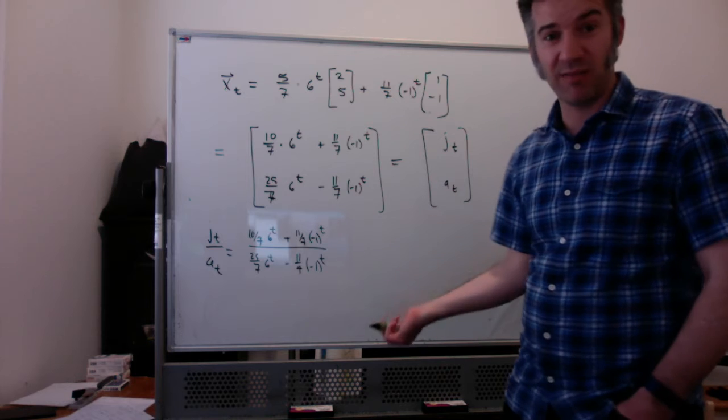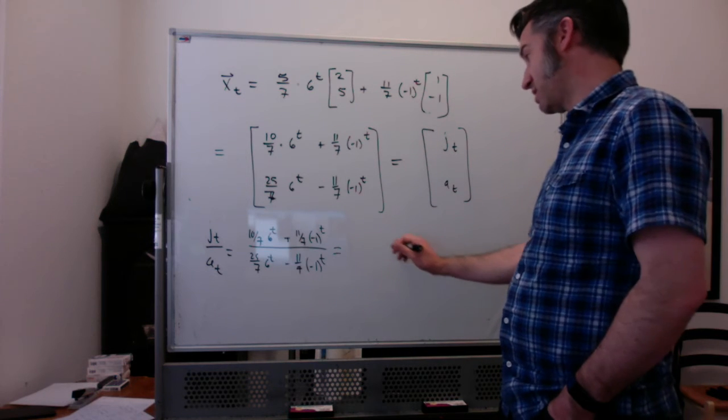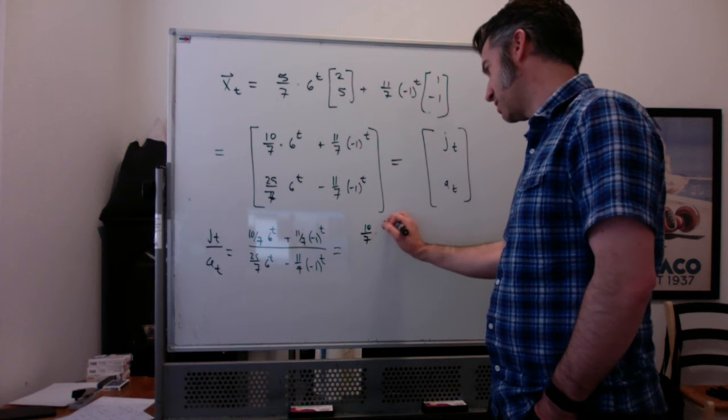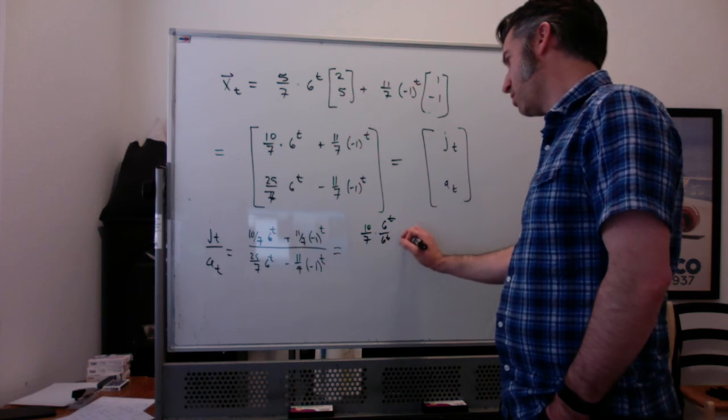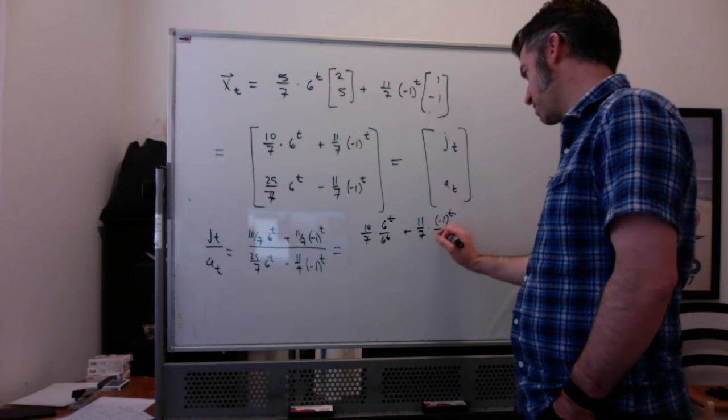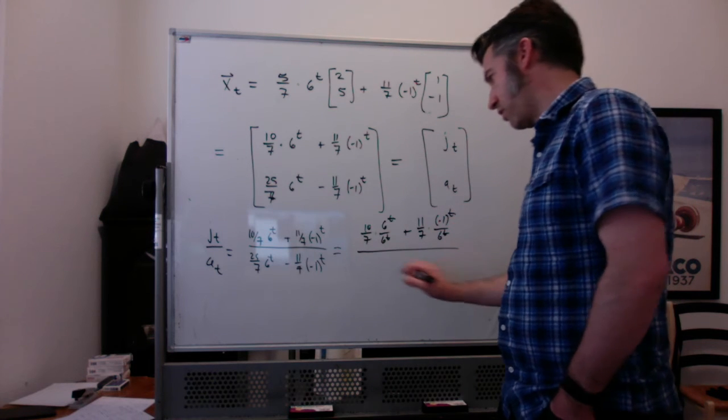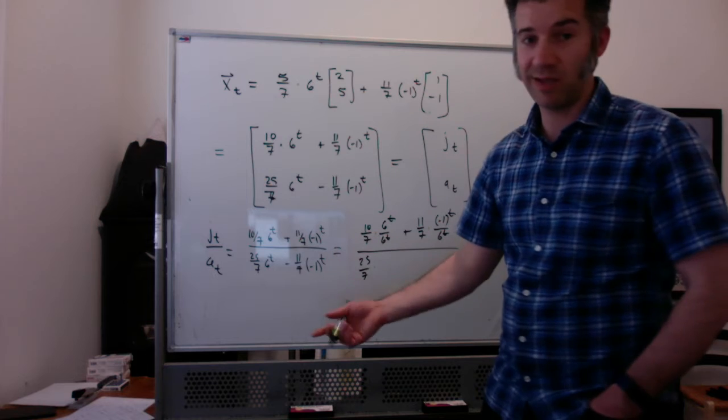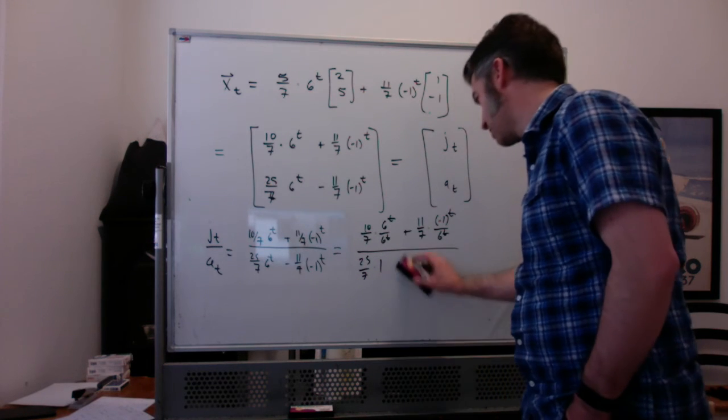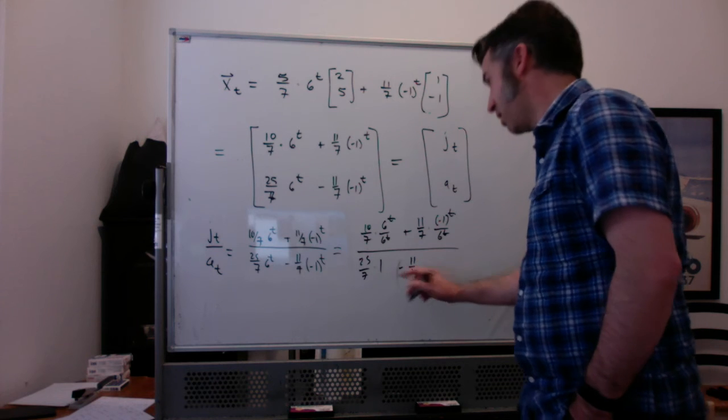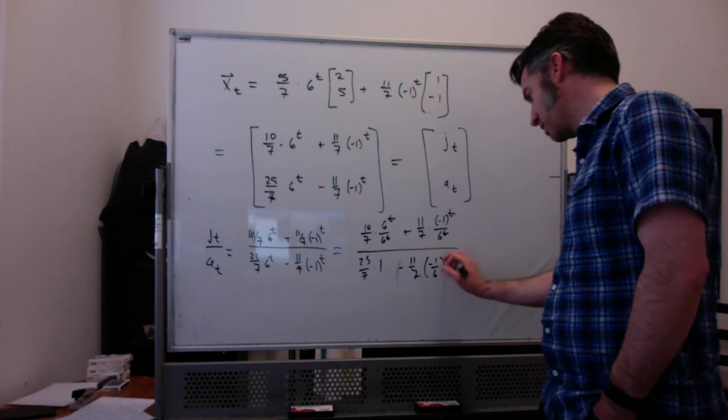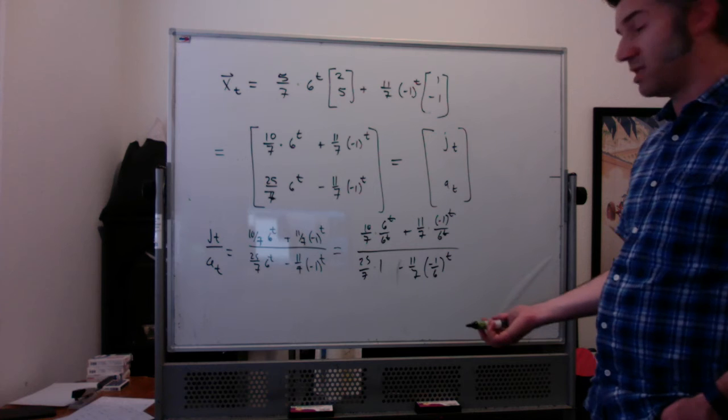Or you can even divide everything by 6 to the t. If I divide everything by 6 to the t, check this out. You get 10 sevenths times 6 to the t over 6 to the t, plus 11 sevenths times negative 1 to the t over 6 to the t over 25 sevenths. 6 to the t over 6 to the t is 1, minus 11 sevenths. Negative 1 to the t over 6 to the t is negative 1 over 6 to the t. And now look what happens as t goes to infinity.